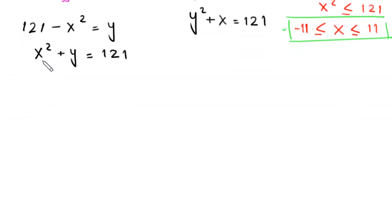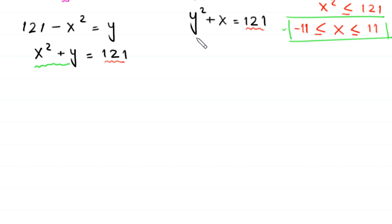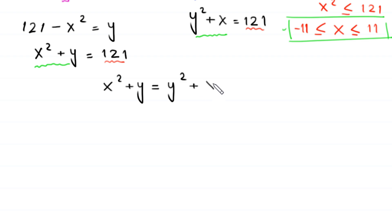Comparing the two equations — y squared plus x equals 121 and x squared plus y equals 121 — since both right-hand sides equal 121, we can equate the left-hand sides: x squared plus y equals y squared plus x. This gives us another equation to work with.